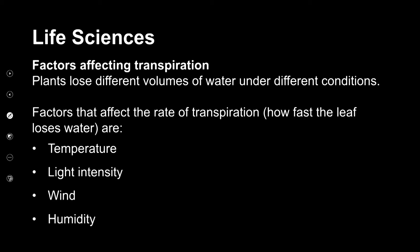We're going to look at four environmental factors: temperature — if it's hotter, do plants lose water more quickly? Light intensity — if it's brighter, do plants lose water more quickly? Wind — if it's windy, do they lose water more quickly? And humidity — if there's moisture in the air, will they lose water more quickly or more slowly? We're going to look at each one to see how this works.